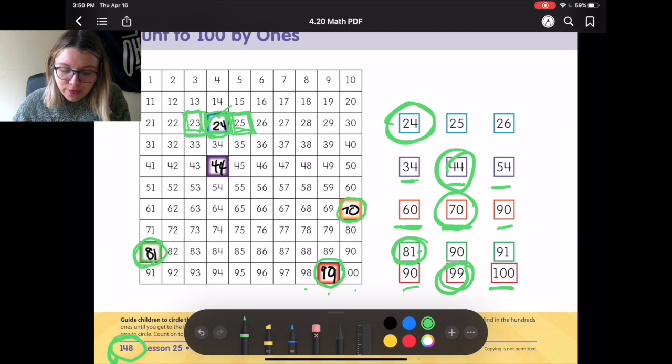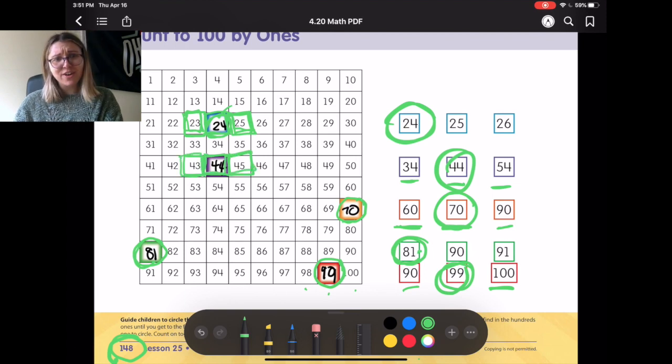Alright, what about with 43? We said 43, 44, 45. Did that sound right? Yeah, but what if I had circle 34 and I said 43, 34, 45. Would that sound right? No, it wouldn't. So that's how we can help use the numbers that are around the empty spaces to figure out what goes there.